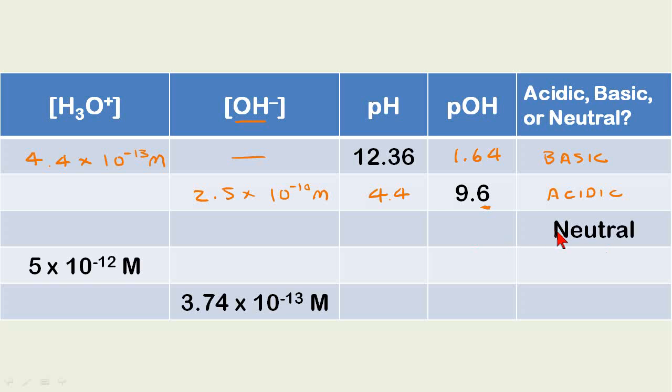Here's another example. What is neutral? Well, we know the pOH and the pH are both 7, and these concentrations are both 1.0 times 10 to the minus 7.